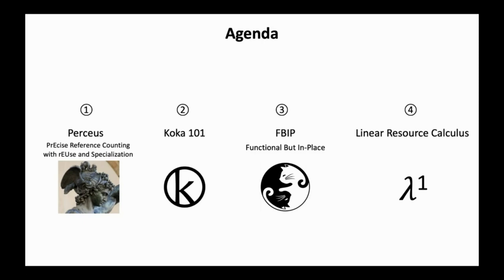The rest of the talk is organized as follows. We will first talk about Perceus, which stands for precise reference counting with reuse and specialization. We then give a brief introduction to COCA and show how strong static guarantees at compile time can further allow Perceus to be integrated with non-trivial language features. Thirdly, we show how Perceus leads to a new programming paradigm that we call FBIP, which stands for functional but in place. Finally, we talk about the underlying theoretical foundation of Perceus, our linear resource calculus lambda 1. We start with Perceus.